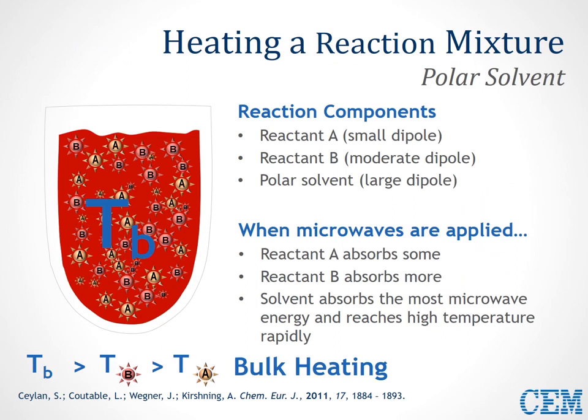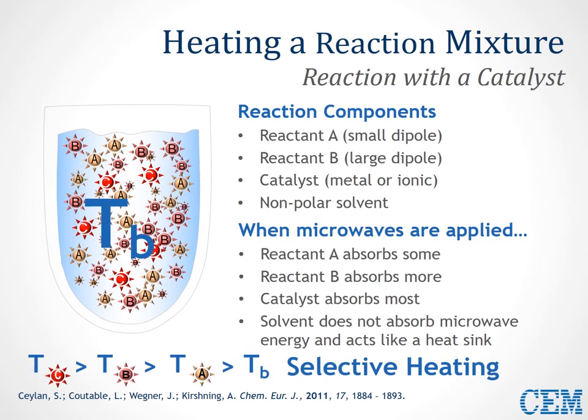In this example, we have a reaction vessel with a polar solvent — let's say methanol — and two reactants of about equal concentration with different dipoles. When microwaves are applied, the reactants will absorb some energy, but the majority of the energy is absorbed by your solvent. This phenomenon is known as bulk heating and is the quickest way to reaching your desired temperature. But what if we don't have a polar solvent? What if we have a non-polar solvent like toluene? The reaction will be difficult to heat based on the solvent, but we do have other components in the reaction that can be selectively heated.